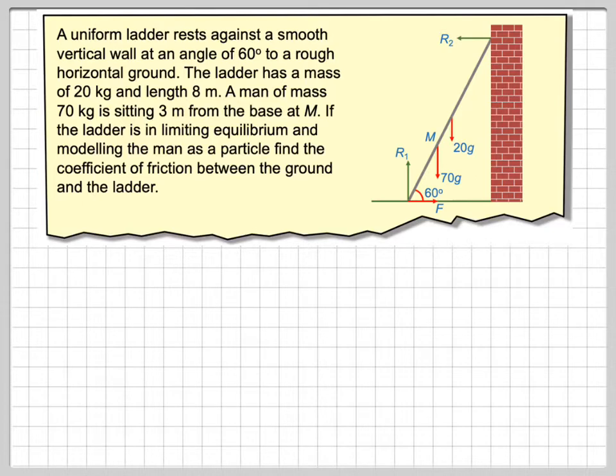So let's just explain a couple of things first. Here we have the ladder against the wall. We will have a normal reaction here, which we're going to call R2, or you could call it N2 if you wanted to. And a normal reaction here will be R1 or N1 if you wanted to call it that.